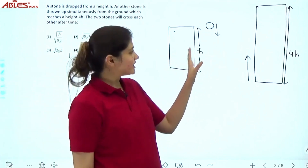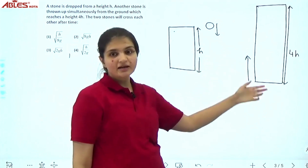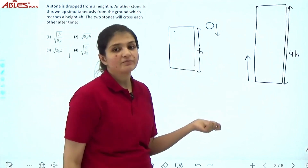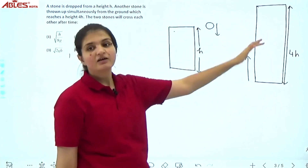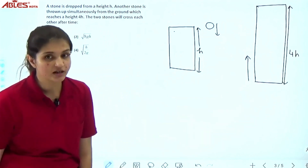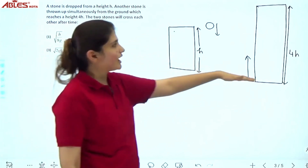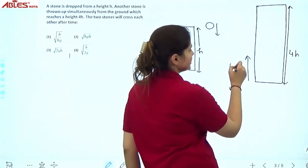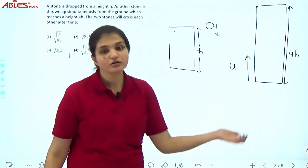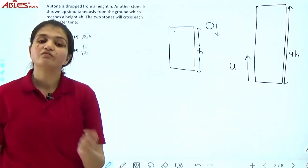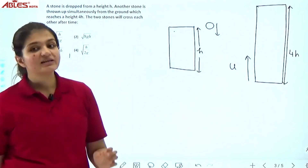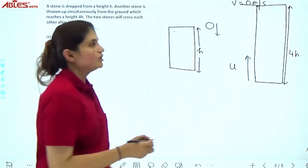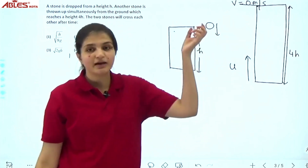So we have one stone at height H, and another stone thrown upward with speed u. This second stone goes to a maximum height of 4H. At maximum height, the velocity becomes 0 meters per second, because when we throw a stone upward, its speed decreases until it reaches zero at the top.